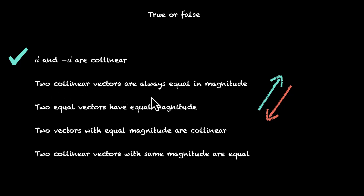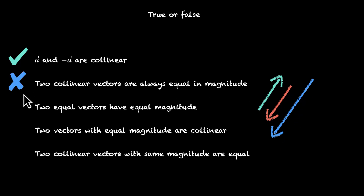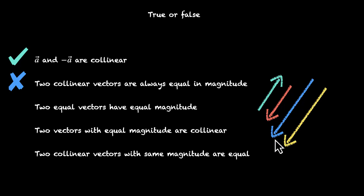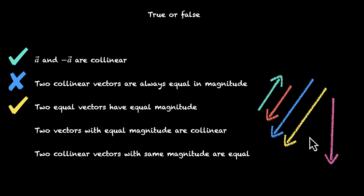Third: two equal vectors have equal magnitude. Yes, that's true — for vectors to be equal they must have the same magnitude and face the same direction, so equal vectors always have equal magnitude. This is true. Fourth: two vectors with equal magnitude are collinear. Again, just because the magnitude is the same doesn't mean they're facing the same direction. These two vectors have the same magnitude but face different directions. So this is false.